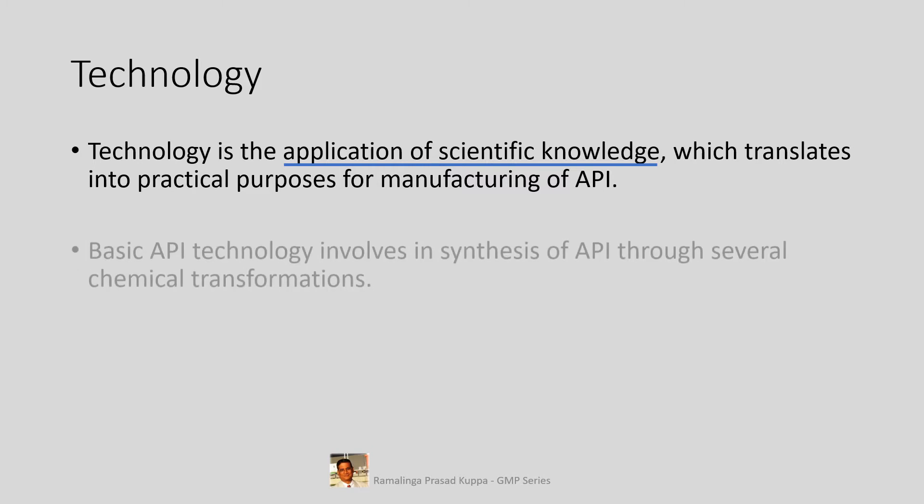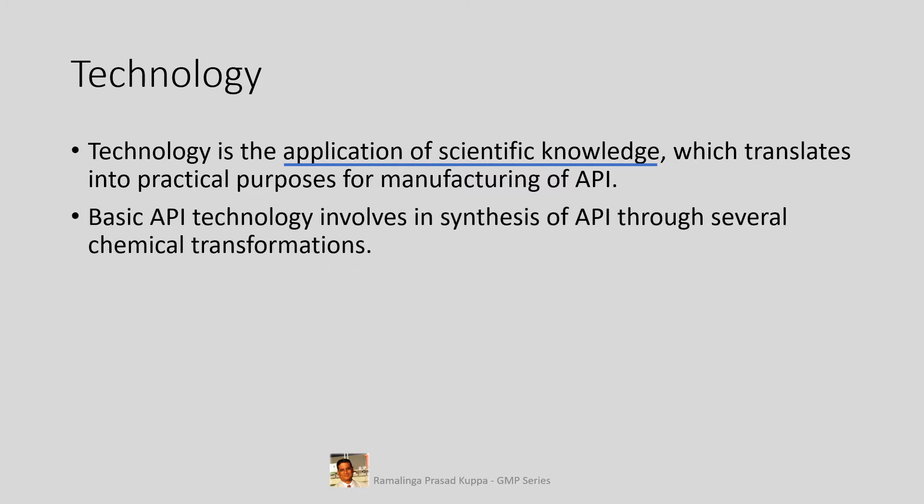Basic API technology involves synthesis of API through several chemical transformations. API is a synthetic product involving several chemical transformations from basic materials into final API. In chemistry, each functional group has a unique property that helps to rearrange, add, or subtract functional groups to get a tailor-made API molecule. A good organic chemist with adequate knowledge on the behavior of several chemicals with several functional groups can achieve this technology effectively.